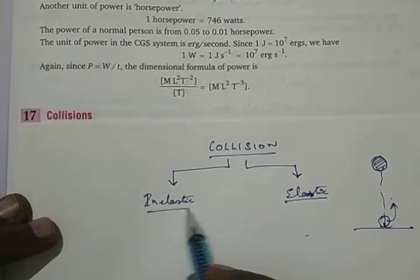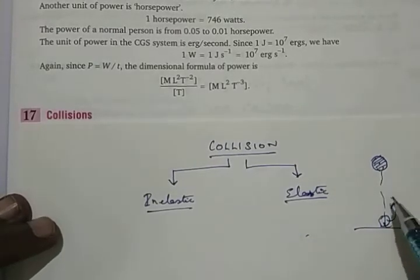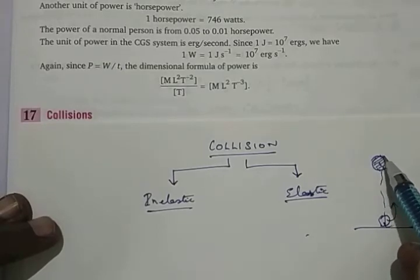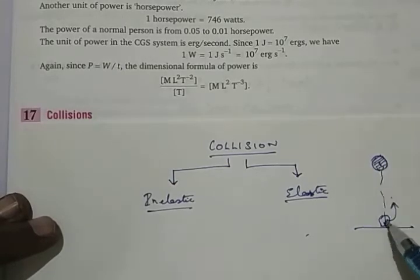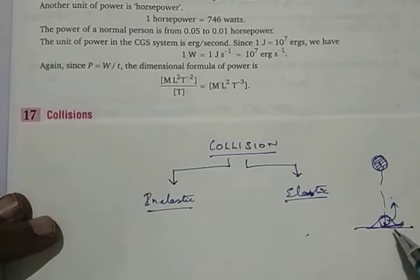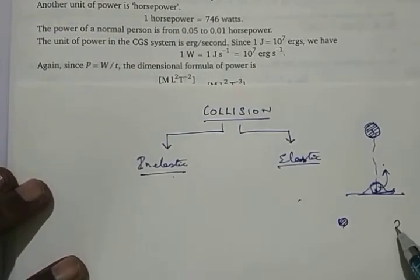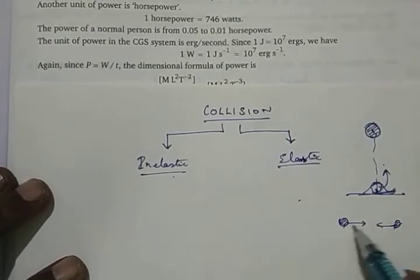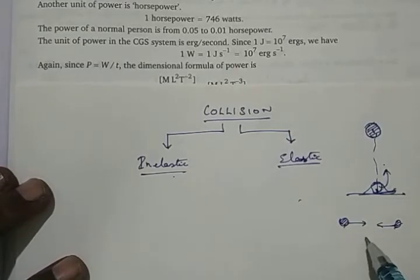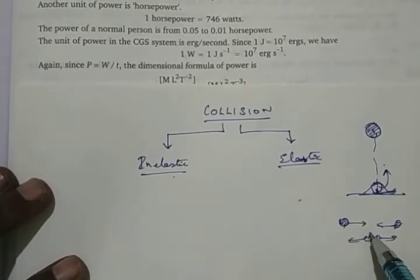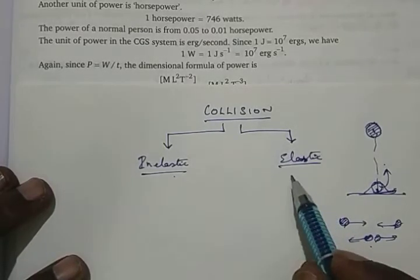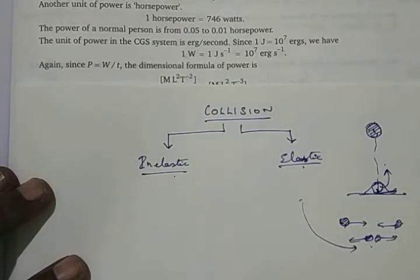Inelastic means: instead of a steel ball, you drop a big ball of clay. When you drop it, it doesn't rebound — it just comes and gets stuck. That is perfectly inelastic. On the other hand, two water molecules when they come together and hit, and after skating they rebound back in the same velocity — that is called perfectly elastic. It comes, collides, and then goes back in the same velocity.